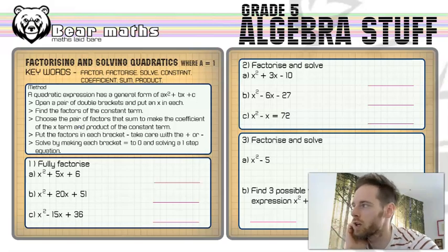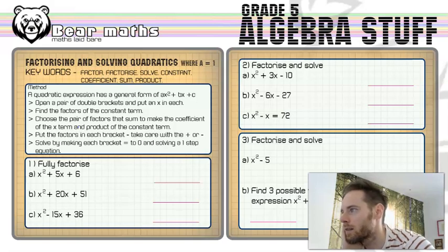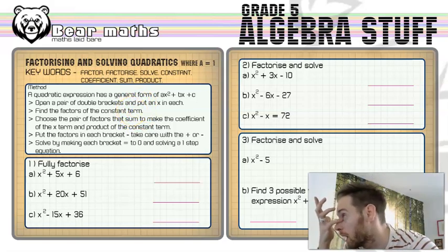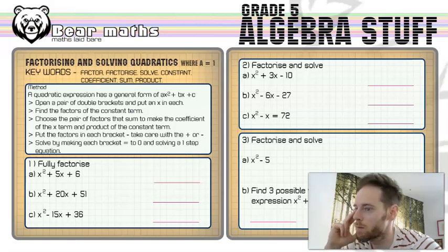Factorise means to put brackets into an expression. Solve means to find the value of the unknown letter. In this it's x. It could be anything. Constant is the number bit of the expression. The coefficient is the number that's in front of the x term or the x squared term. The sum is the result of adding some numbers and the product is the result of multiplying some numbers together.